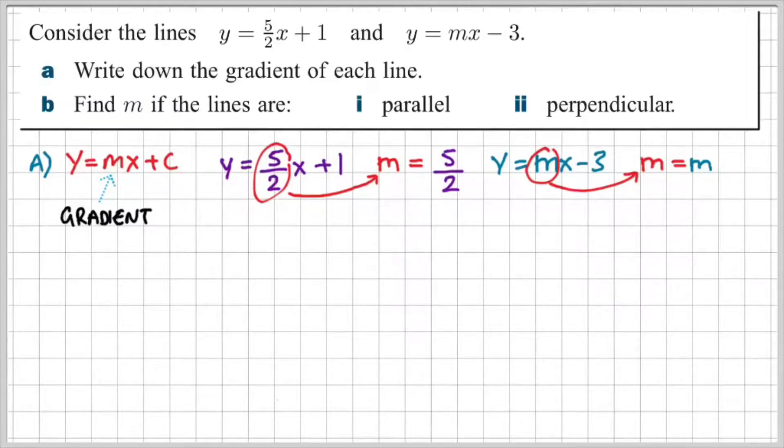Pause the video here and try part B for yourself. Find m if the lines are parallel and perpendicular. So if these two equations were parallel, what would m be? And if they were perpendicular, what would m be then?